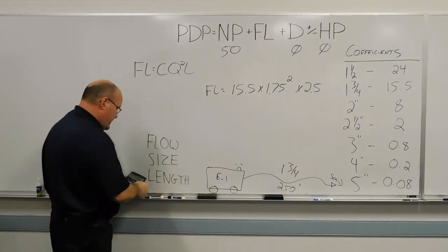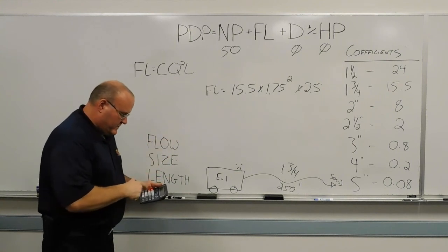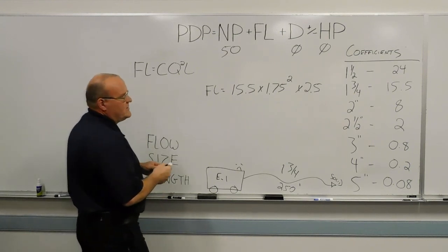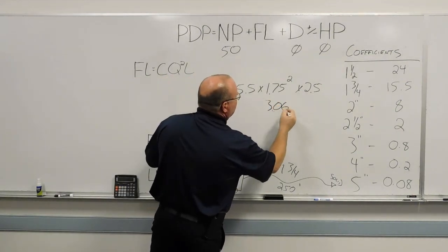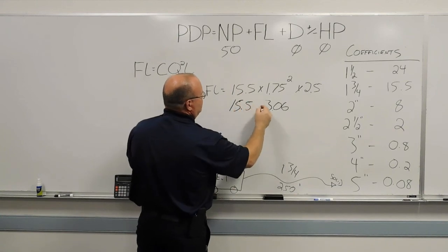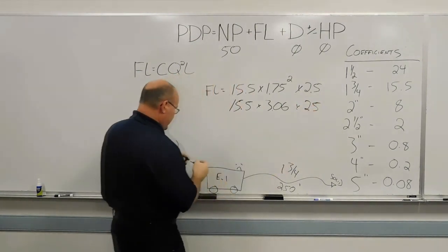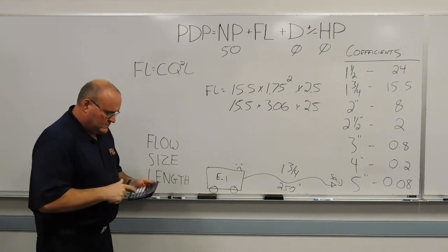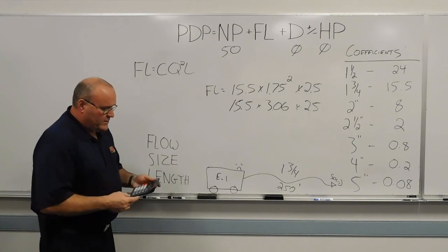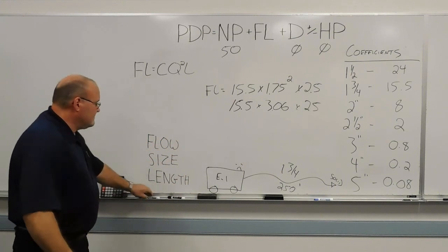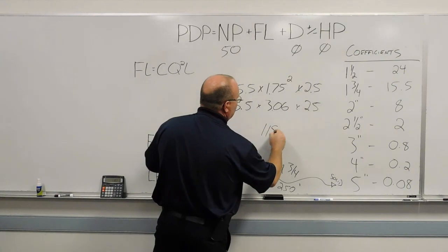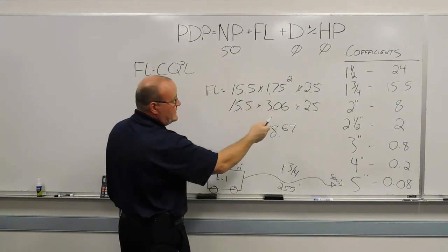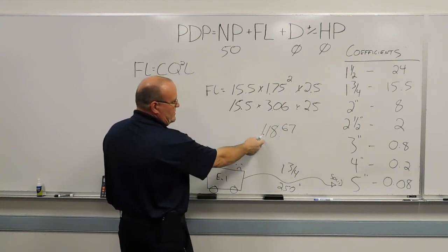So we go back to our calculator here. 1.75 times 1.75 would give us 3.06. And this is the thing with these coefficient methods. You end up with much stricter numbers. And then 15.5 times that, times 2.5. So we'll do that real quick here on the calculator and see what we come up with. We end up with 118.67. So that number, and again, I left this at what it was on the calculator at 3.0625 is what I left it at. 15.5 times that, times 2.5 gave me 118.67.